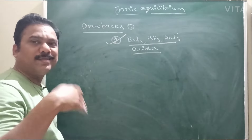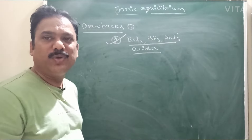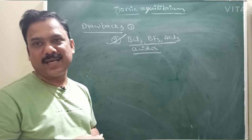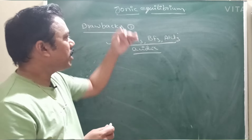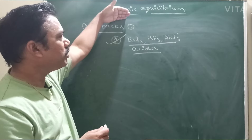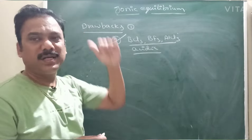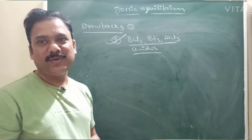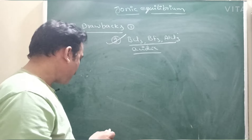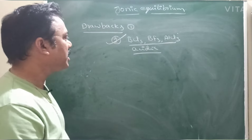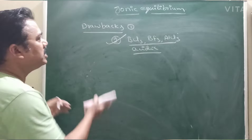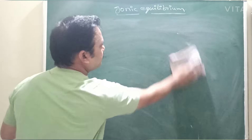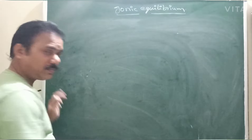To overcome these drawbacks, another theory was introduced by Lewis — called the Lewis acid-base theory. Bronsted-Lowry is also called the proton theory, while Lewis theory is the electron-pair theory.